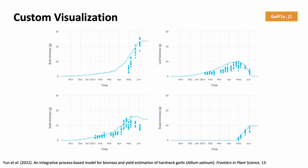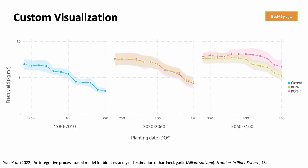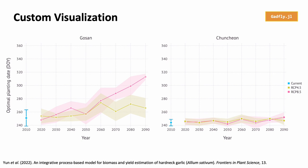Since the results are stored in a data frame, users can easily come up with custom visualizations if needed. Here are some examples we created using Gadfly. This is a plot comparing bulb productions of garlic under climate change scenarios. Another figure showing a possible shift of optimal planting dates in the future.